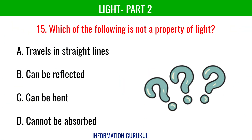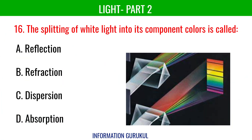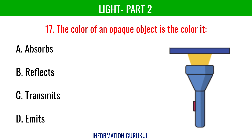Which of the following is not a property of light? Cannot be absorbed. The splitting of white light into its component colors is called dispersion. The color of an opaque object is the color it reflects.